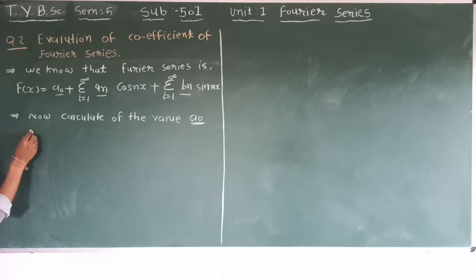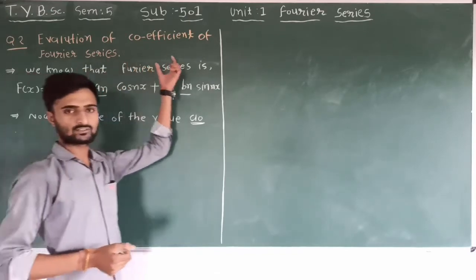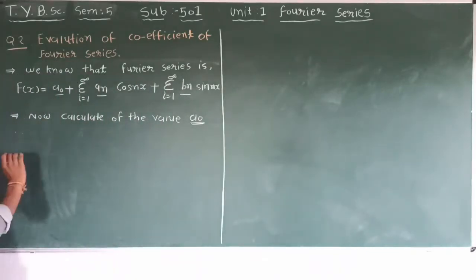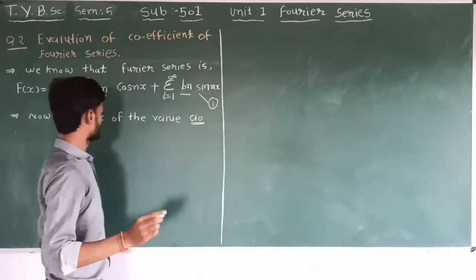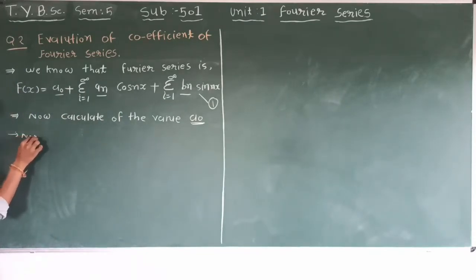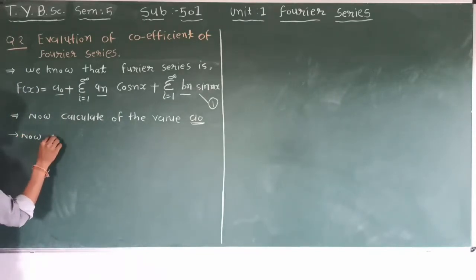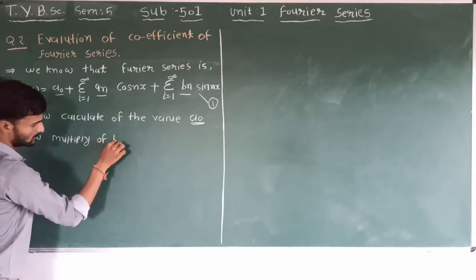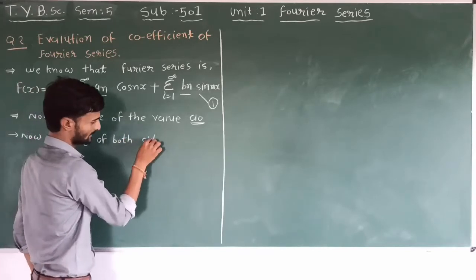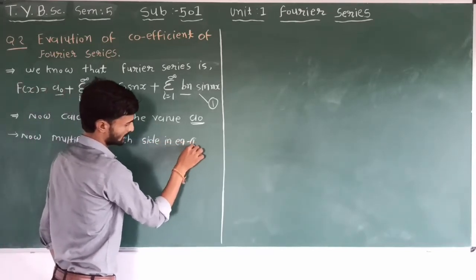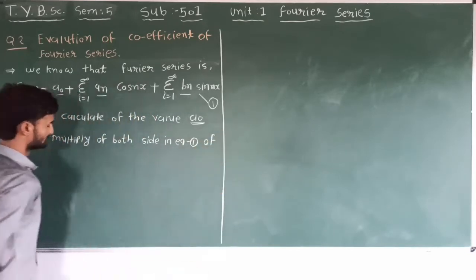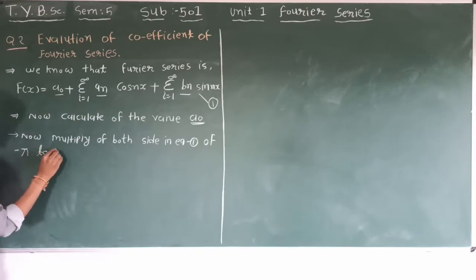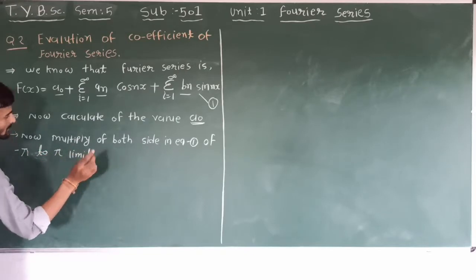So, integrating both sides of equation number 1 from minus pi to pi. Now multiply both sides of equation 1 by integrating from minus pi to pi.